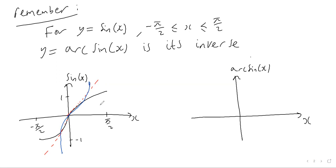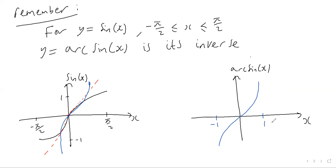So the arcsin graph is going to look something like this, stopping at each end. The domain of an inverse function is the same as the range of the original function. So the domain of the arcsin function — the x values — are going to be the same as the range of the sine function. The sine function ranges from minus one up to one, so the domain of arcsin goes from minus one to one.